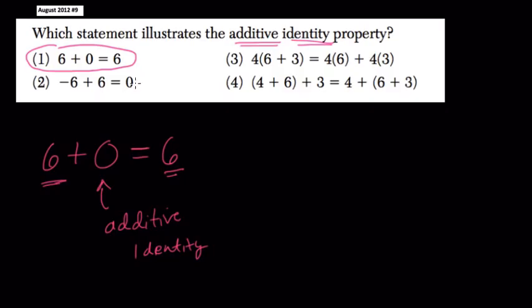Here, choice 2 is the additive inverse property because you're adding two opposites and getting 0.